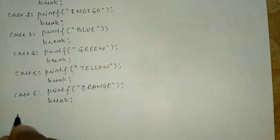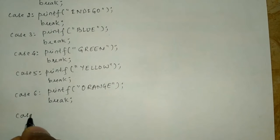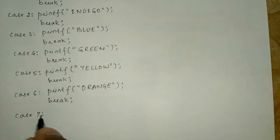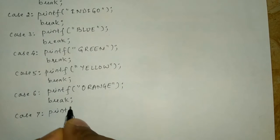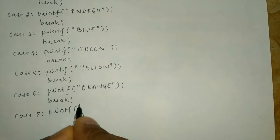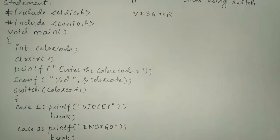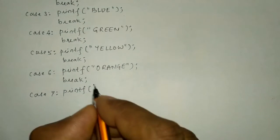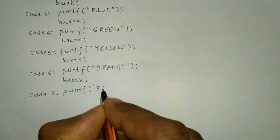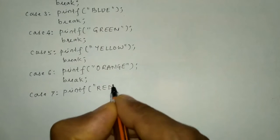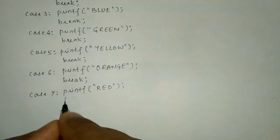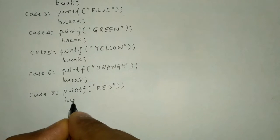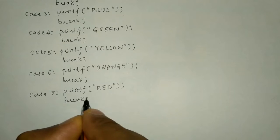Similarly, case seven — printf statement. After orange we had red, so we write 'red' here, end the double quotation mark, put a semicolon, and then the break statement.